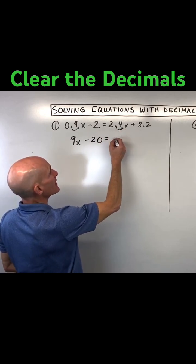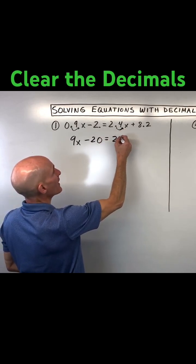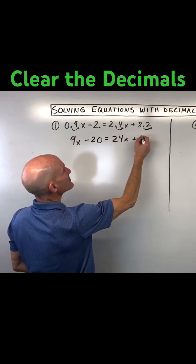Same thing here. If I multiply this guy by 10, that's going to give us 24x. And then this guy we multiply by 10, that's going to give us 82.